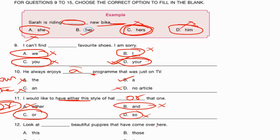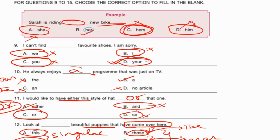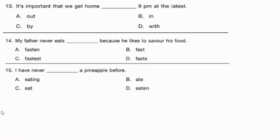'Look at ___ beautiful puppies that have come over here.' Puppies is plural, so we can't use 'this' or 'that' which are for singular things. We choose between 'those' and 'these.' 'Those' refers to things far from us, 'these' refers to things close to us. Since the puppies have come over here — close to us — we use 'these.' The correct answer is these.